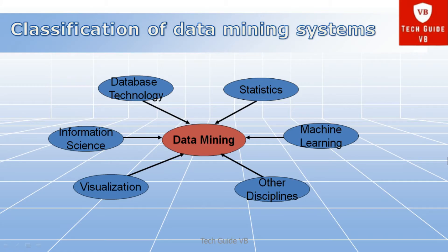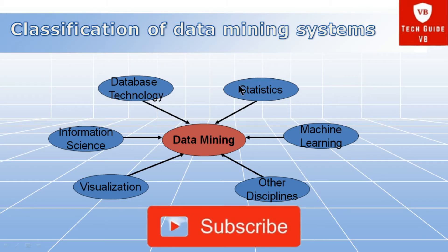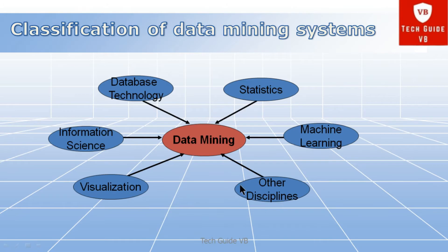This diagram shows that data mining is divided into or classified into different data mining systems such as database technology, statistics, machine learning, visualization, information science, and other disciplines. All these categories make data mining a very important and powerful system.